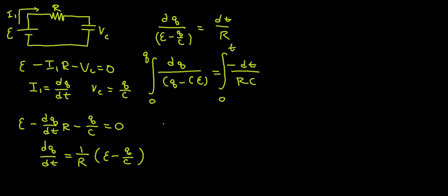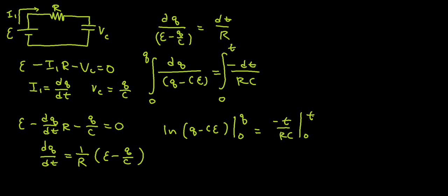For those of you doing calculus, we're going to integrate, and I'll have the expression ln of (Q minus C·epsilon) evaluated from 0 to Q equals negative t over RC evaluated from 0 to t.